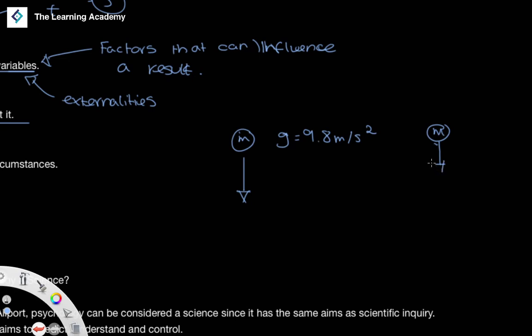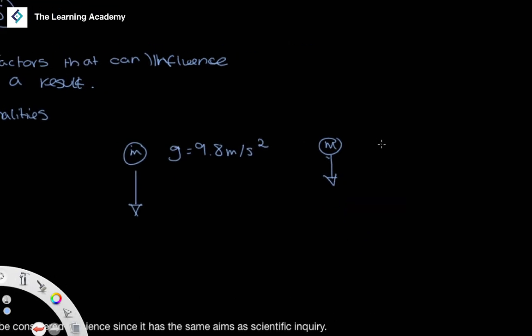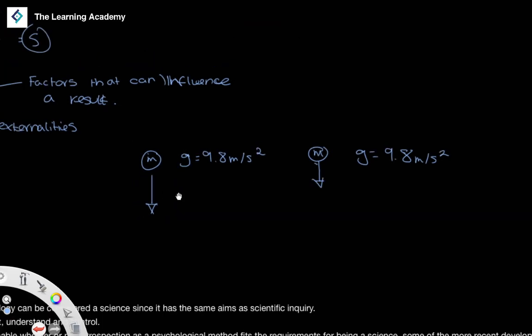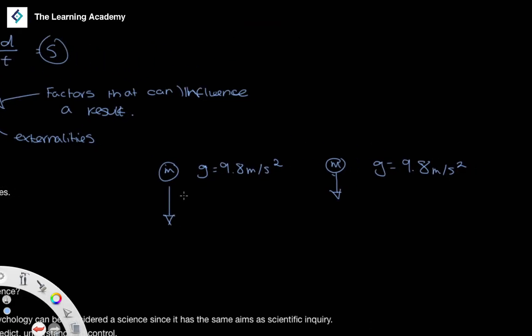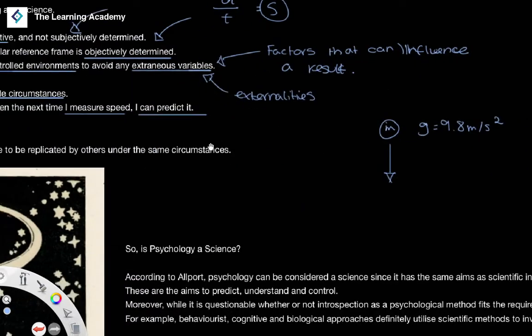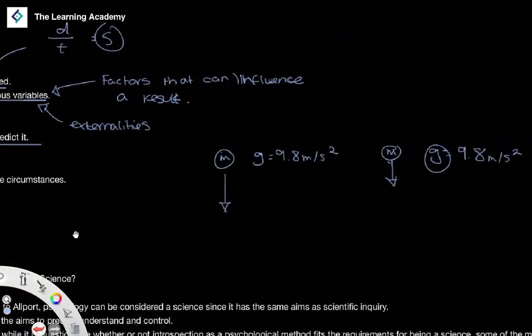If I then wait a year and drop the mass m again, I know that the gravity is not going to have changed. It's always going to be 9.8 meters per second squared when we're on Earth. So I can predict that this is something that is going to happen, that if I drop a mass, it is going to fall to the ground at the rate of the gravitational constant for Earth. And I can also replicate this experiment.